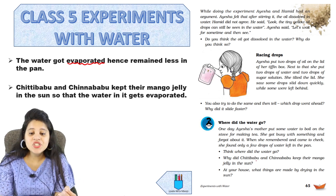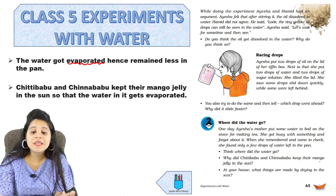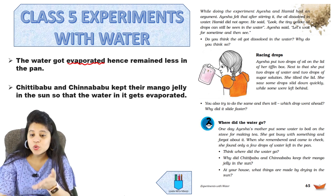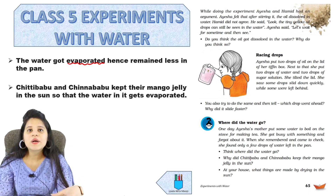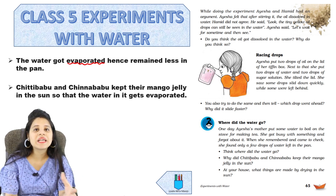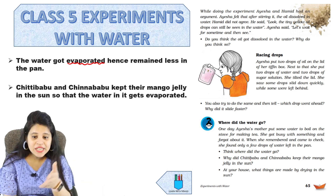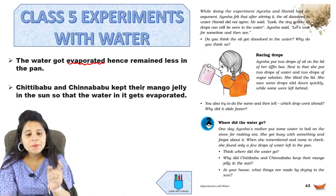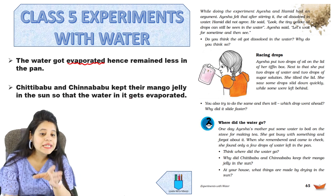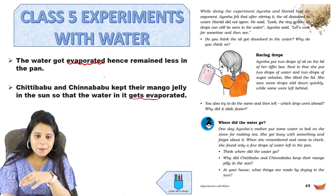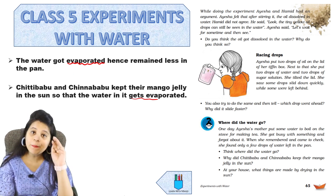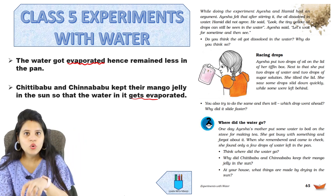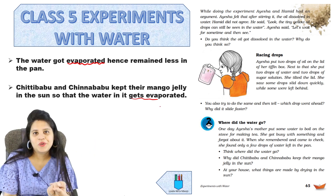Why did Chiti Babu and Chinna Babu keep their mangoes in the sun? So that the water in them gets evaporated. When they make mango pickles, they keep the mangoes in the sun. Because when it gets warm in the sun, the water in it will evaporate — just like water evaporates when heated on a gas stove.